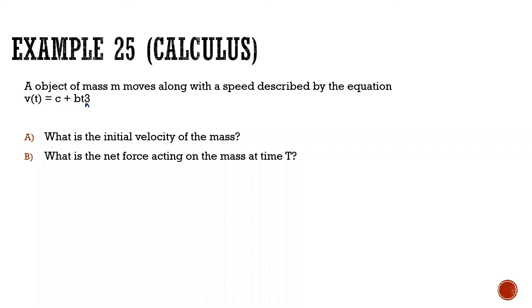v(t) = c + bt³. When t = 0, the bt³ term becomes zero, so the initial velocity is simply c.